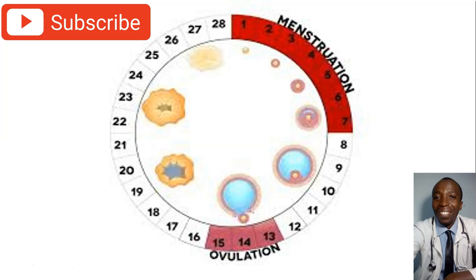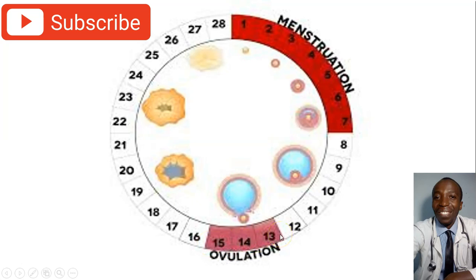Even though your ovulation date is on the 14th, we give an allowance for the days before ovulation and the days immediately after. The days before your periods, plus the ovulation date, plus the days after are what we call your fertile window — the unsafe days, or the days you are most likely to get pregnant.